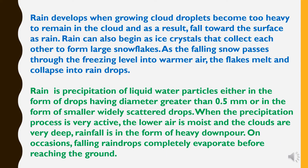Rain develops when growing cloud droplets become too heavy to remain in the clouds and fall towards the surface as rain. Rain can also begin as ice crystals that collect each other to form large snowflakes. As the falling snow passes through the freezing level into warmer air, the flakes melt and collapse into raindrops.